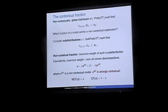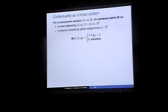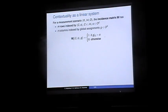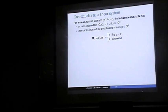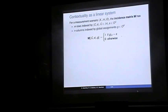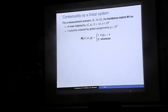Equivalently, the non-contextual fraction is the maximum weight over all convex decompositions of the model: if you write the model as a convex combination of a non-contextual model and some other contextual model, the maximum weight lambda you could give the non-contextual part is the non-contextual fraction. Whenever lambda is maximal, the other model will be strongly contextual. So lambda goes from 0 to 1 between non-contextuality and strong contextuality. We write NCF for non-contextual fraction and CF for contextual fraction.